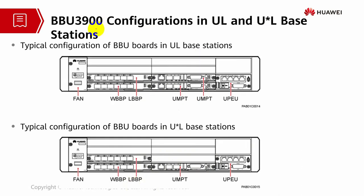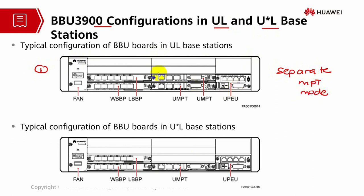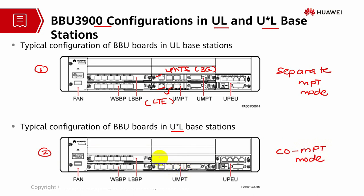The second example is a similar situation but a different technology. The first one is UL, the second one is U times L. For UL, it is a separate MPT mode requiring two UMPT cards — one in charge of UMTS (3G) and the second one in charge of LTE. U times L is the co-MPT mode, where one main control board handles both technologies.